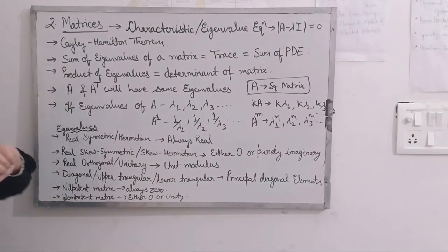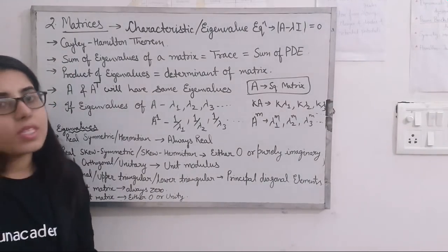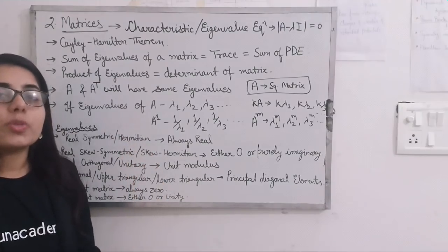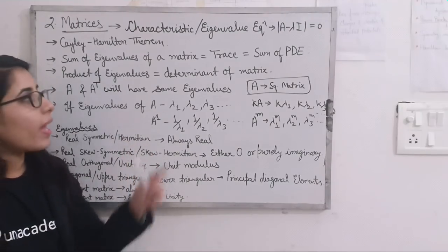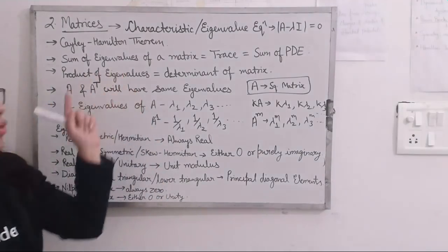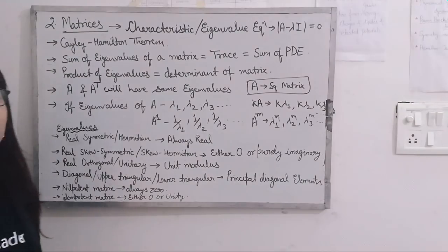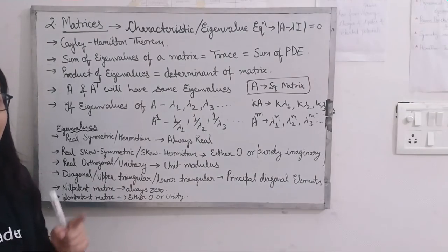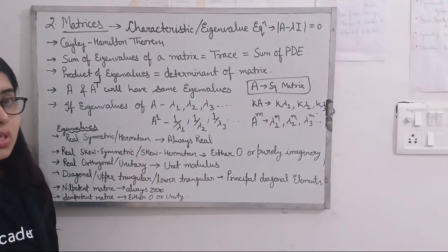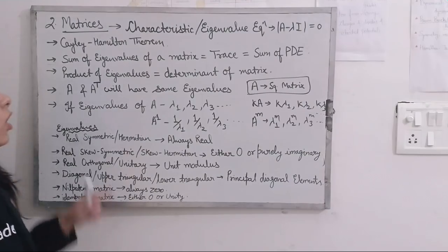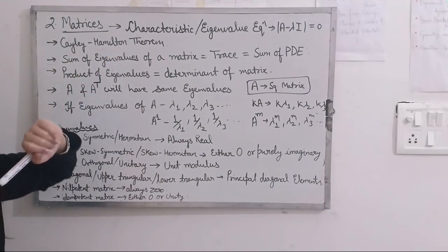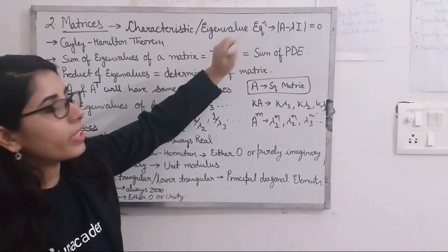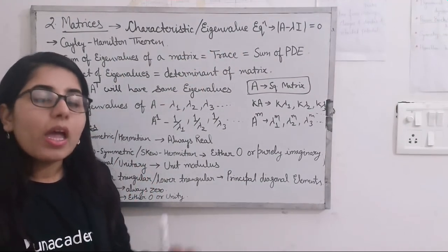Next is the Cayley-Hamilton theorem, which is another important topic of matrices. Chances of questions being asked from this are very high. The characteristic eigenvalue equation is also asked a lot. The Cayley-Hamilton theorem is also one of the most important topics. According to its statement, you first need to solve the characteristic equation.